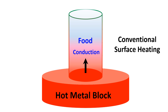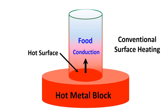Conventional heating is surface heating. This can be understood clearly in this example: a cylindrical shaped food is placed on a hot plate, and heat transfer starts from the bottom surface and conducts heat to the top surface.